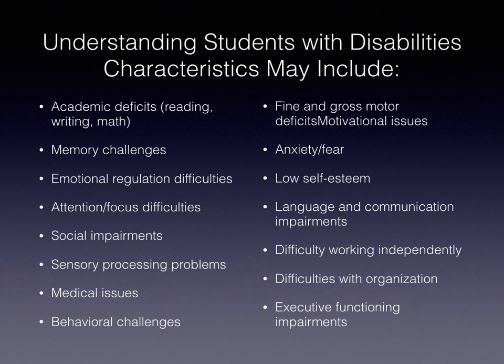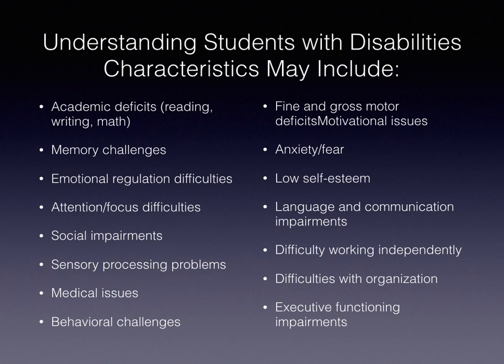Many students with disabilities have memory challenges, requiring a lot of explicit instruction and strategy instruction to remember things that come more naturally to other students. Some students have emotional regulation difficulties — the inability to manage intense emotions and cope with them in a way that is acceptable in a school setting. If a student gets frustrated, scared, or angry and has emotional regulation difficulties, that can result in the student going from zero to sixty in seconds and having an outburst. Knowing this means we can put strategies and supports in place to teach coping skills.